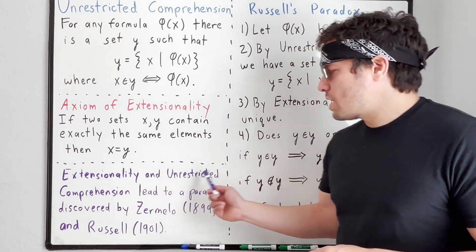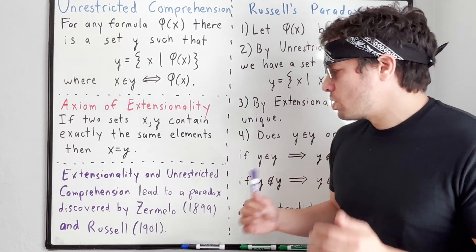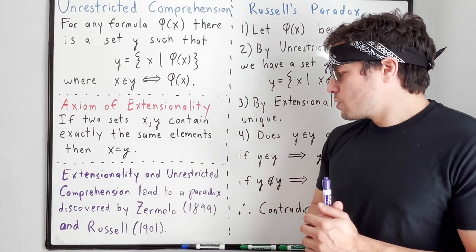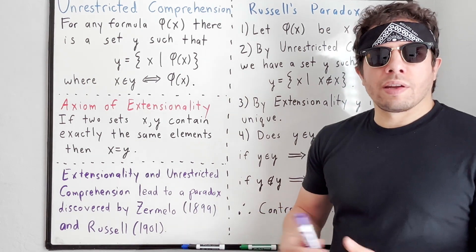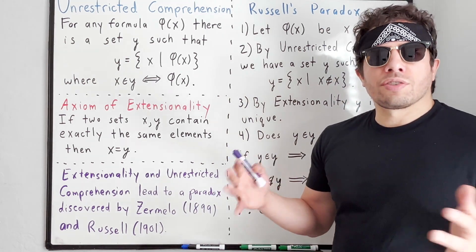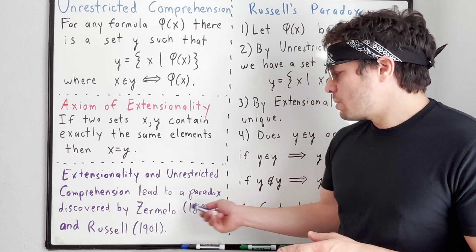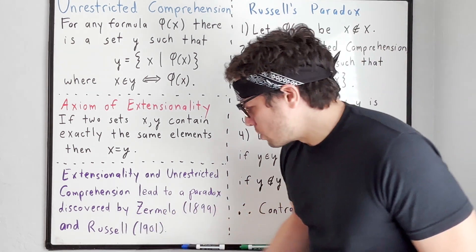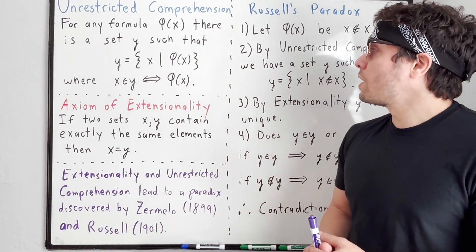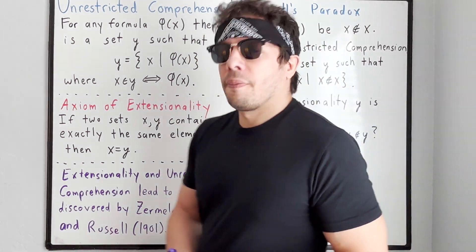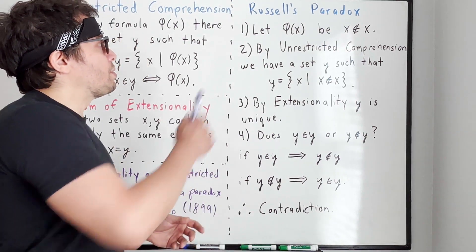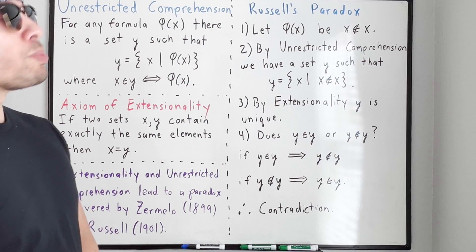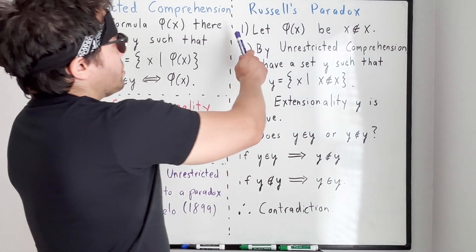It turns out extensionality and unrestricted comprehension when combined they lead to a paradox which was first discovered by Zermelo through correspondence and discussions in the group he was in at the time in 1899 and was later solidified by Russell in 1901 when he countered Frege's work. So let's review how we derive this paradox, now known as Russell's paradox.